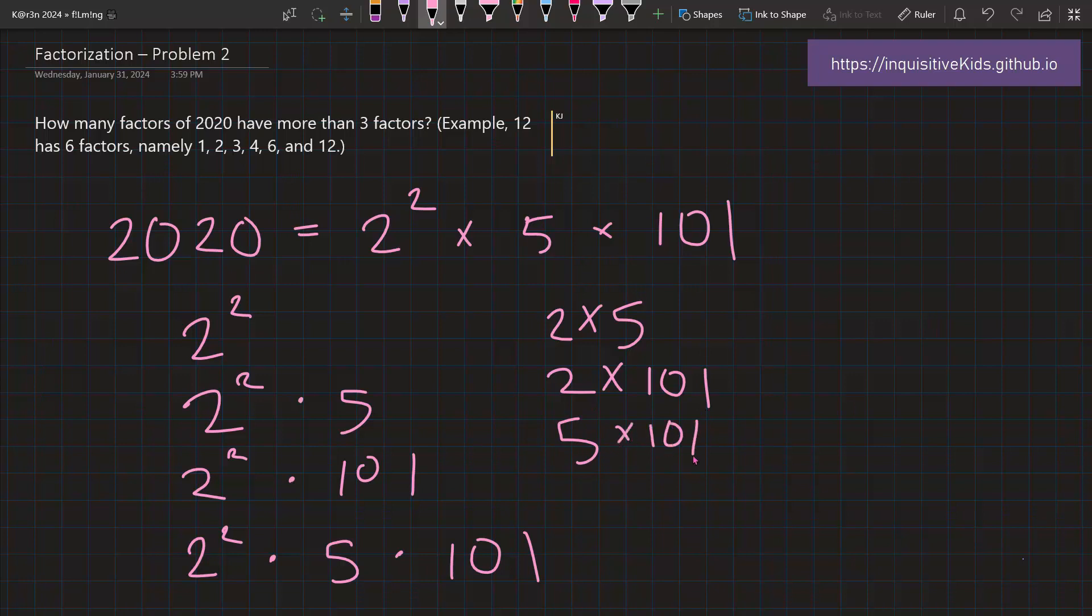So by writing it out in an order like this, we're able to keep track of our thoughts. We see that there are 7 total combinations. Therefore, each of these are a factor of 2020. Therefore, 7 factors of 2020 are composite, or have more than 3 factors.